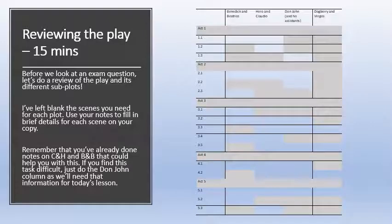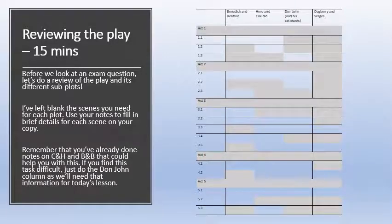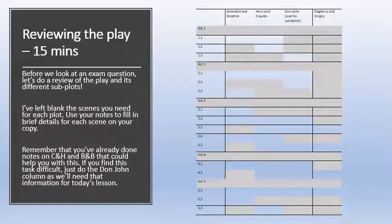I've left blank the scenes you need for each plot. Use your notes to fill in brief details for each scene on your copy, which has been attached to Class Charts. Remember that you've already done notes on Claudio and Hero, and Benedick and Beatrice — that could help you with this. If you find this task difficult, just do the Don John column, as we'll need that information for today's lesson. At the very least, make sure you do the Don John column.